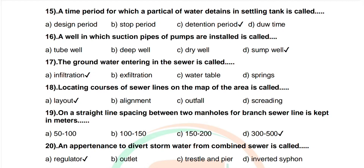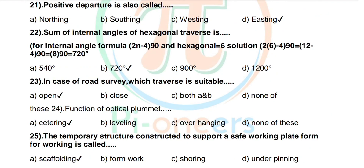Question 20: A pertence used to divert stormwater from a combined sewer is called — options: regulator, outlet, interceptor, inverter. Correct answer: regulator. Question 21: Positive departure is also called — options: northing, southing, westing, easting. Correct answer: easting. Question 22: Sum of internal angles of a hexagon is — options: 540°, 720°, 900°, 1200°. Correct answer: 720°.